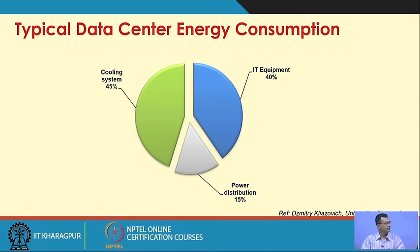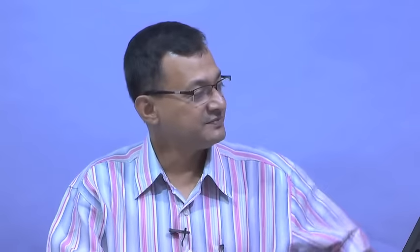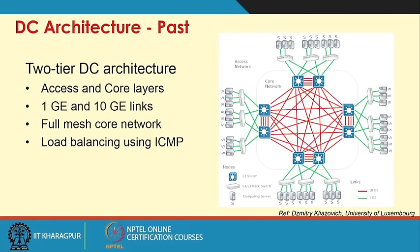Energy accounts for ten percent of data center operational cost today and can rise to fifty percent in the next few years. The cooling system costs around two to five million dollars per year. Looking at a rough breakdown: computing equipment takes around forty percent of power, power distribution takes around fifteen percent, and the cooling system takes around forty-five percent. So sixty percent of energy is consumed by the infrastructure itself, while computing is only around forty percent.